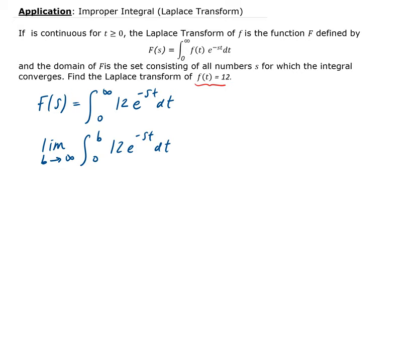To solve this integral — this is a simple integral from calc 1 — we can use the substitution rule. We're going to let u be equal to the argument of e, which is minus st. So du: taking the derivative of u with respect to t gives us minus s dt. Therefore, we get minus 1 over s du equals dt, so dt gets replaced by minus 1 over s du.